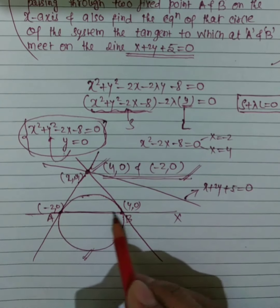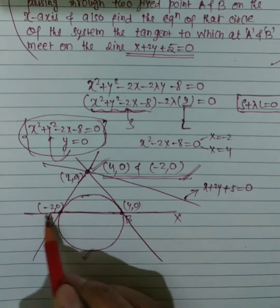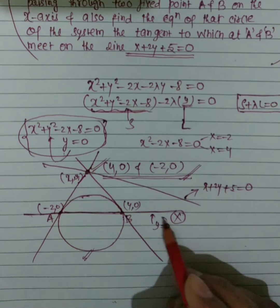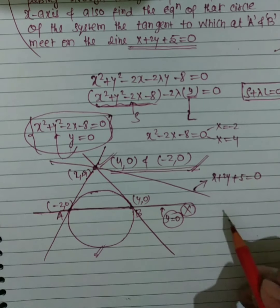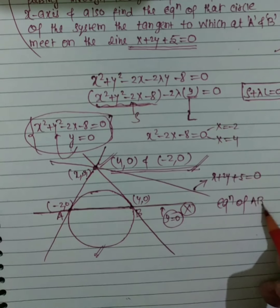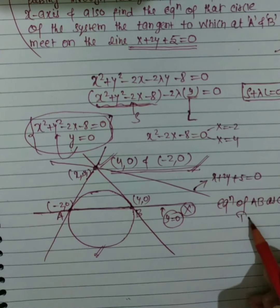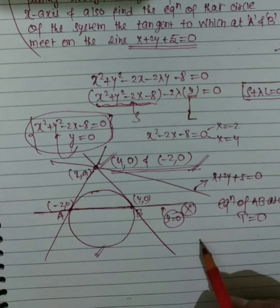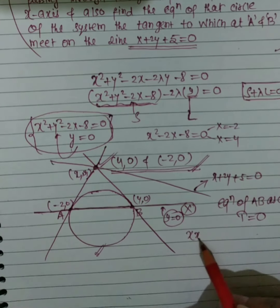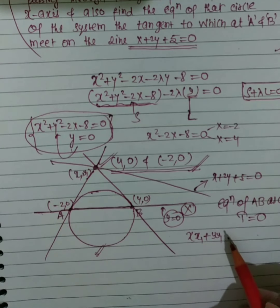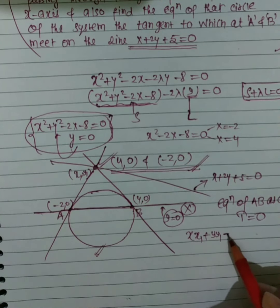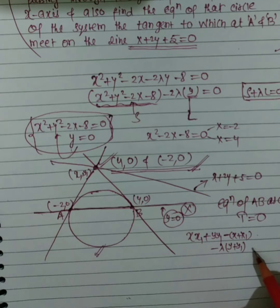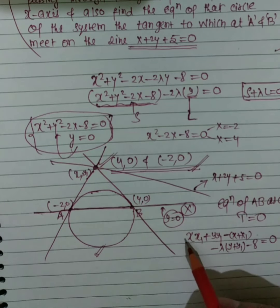Let's say this is the x-axis, A and B are on it. The equation of AB as a chord of contact is T = 0. So T = 0 gives: x·x₁ + y·y₁ − (x + x₁) − λ(y + y₁) − 8 = 0.